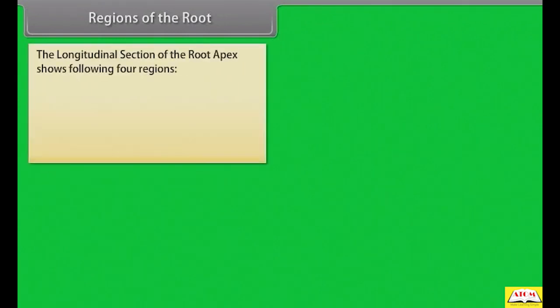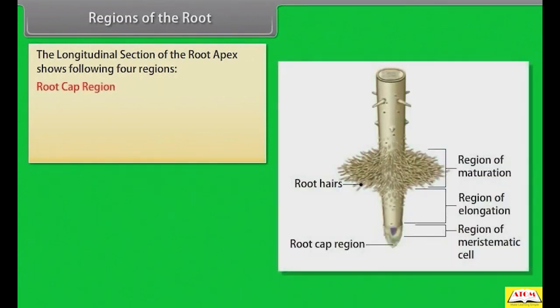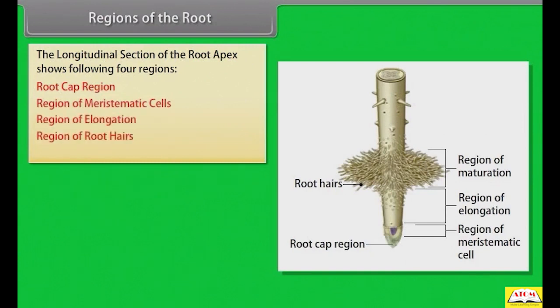The longitudinal section of the root apex shows the following four regions: root cap region, region of meristematic cells, region of elongation, region of root hairs, and region of maturation.